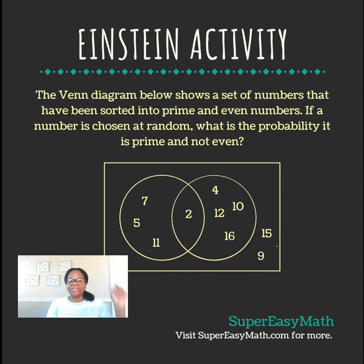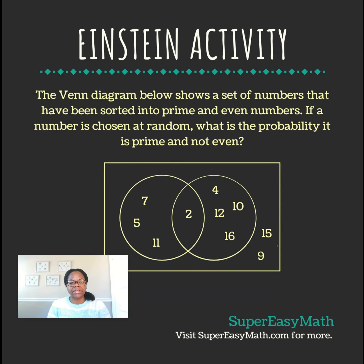Hey guys, it's Tiffany from Super Easy Math. Today's Einstein activity says the Venn diagram below shows a set of numbers that have been sorted into prime and even numbers. If a number is chosen at random, what is the probability it is prime and not even?